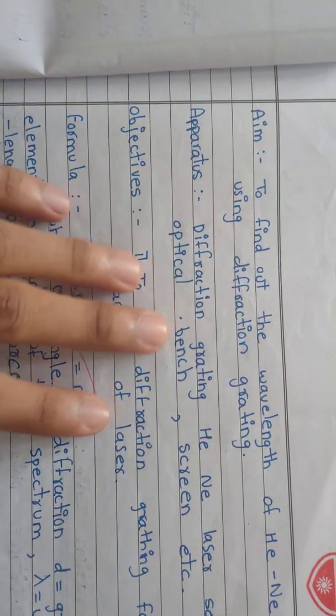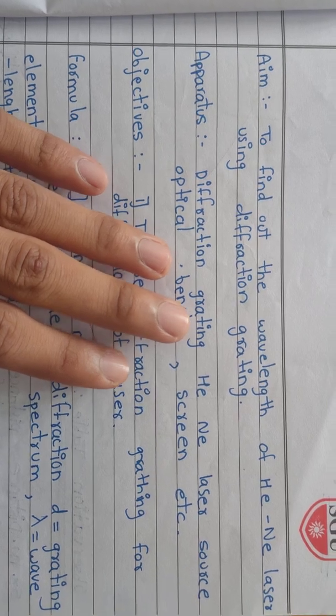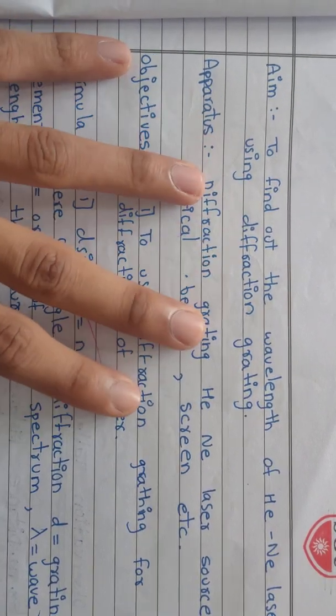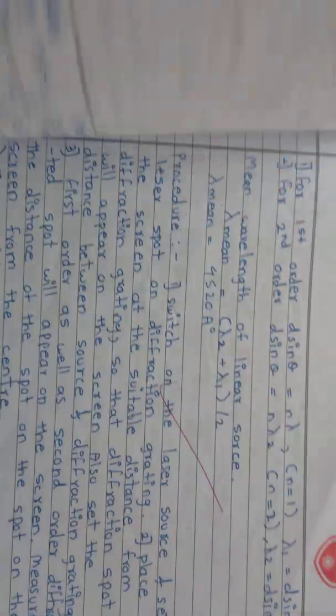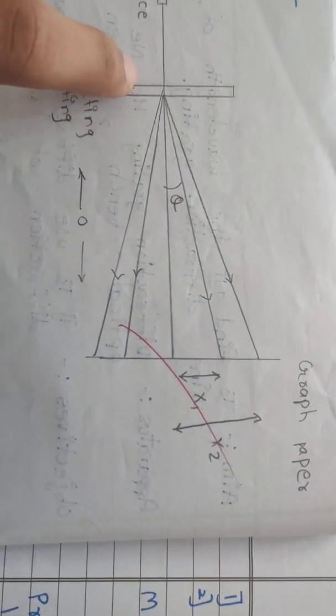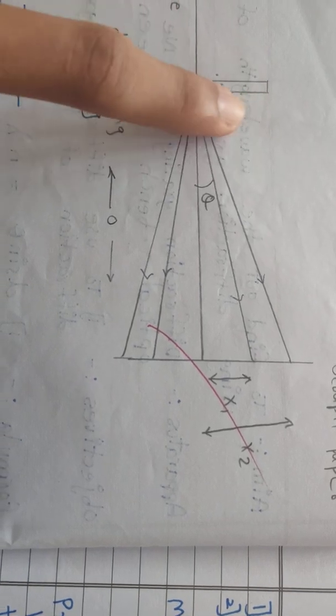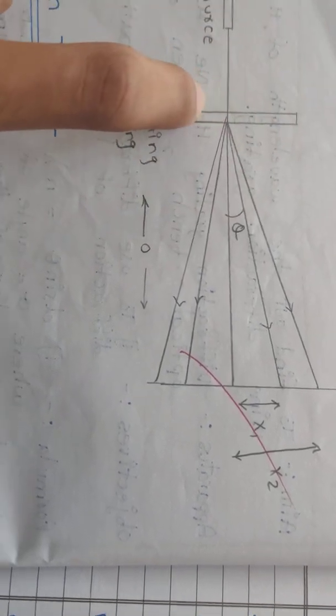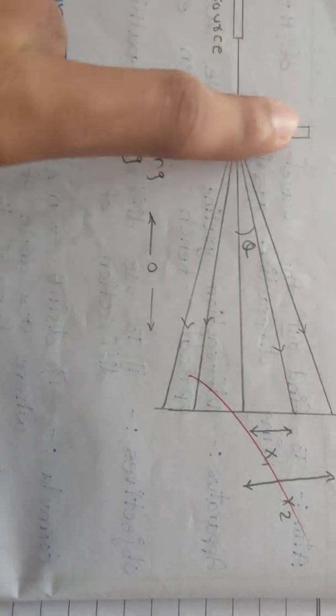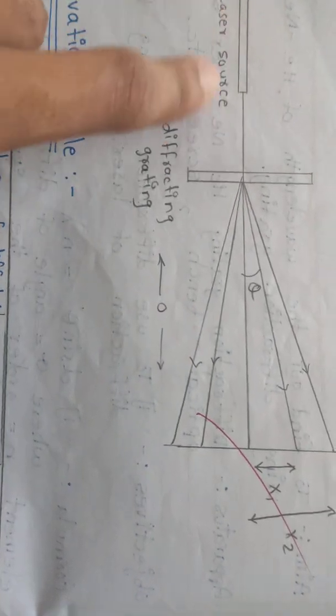Experiment number two to find out the wavelength of HeNe laser using diffraction grating. Diffraction grating basically is a plate where we have 15,000 per inch lines inside this diffraction grating plate. This is the screen, this is the laser source.